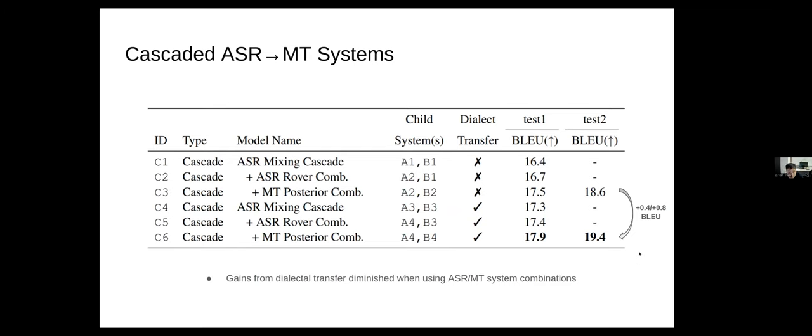Let's look at the ST results of our cascaded systems. You can see that generally systems benefit from different types of ensembling, the ASR rover combinations and MT posterior combinations, and this is true for both the cases where we use only the Tunisian Arabic data and for cases where we apply dialectal transfer. You can see that our dialectal transfer results, or in other words, the difference between C3 and C6, showed a 0.4 to 0.8 BLEU improvement. We also noticed that the gains from dialectal transfer diminished slightly when our systems got better from ASR and MT system combinations.